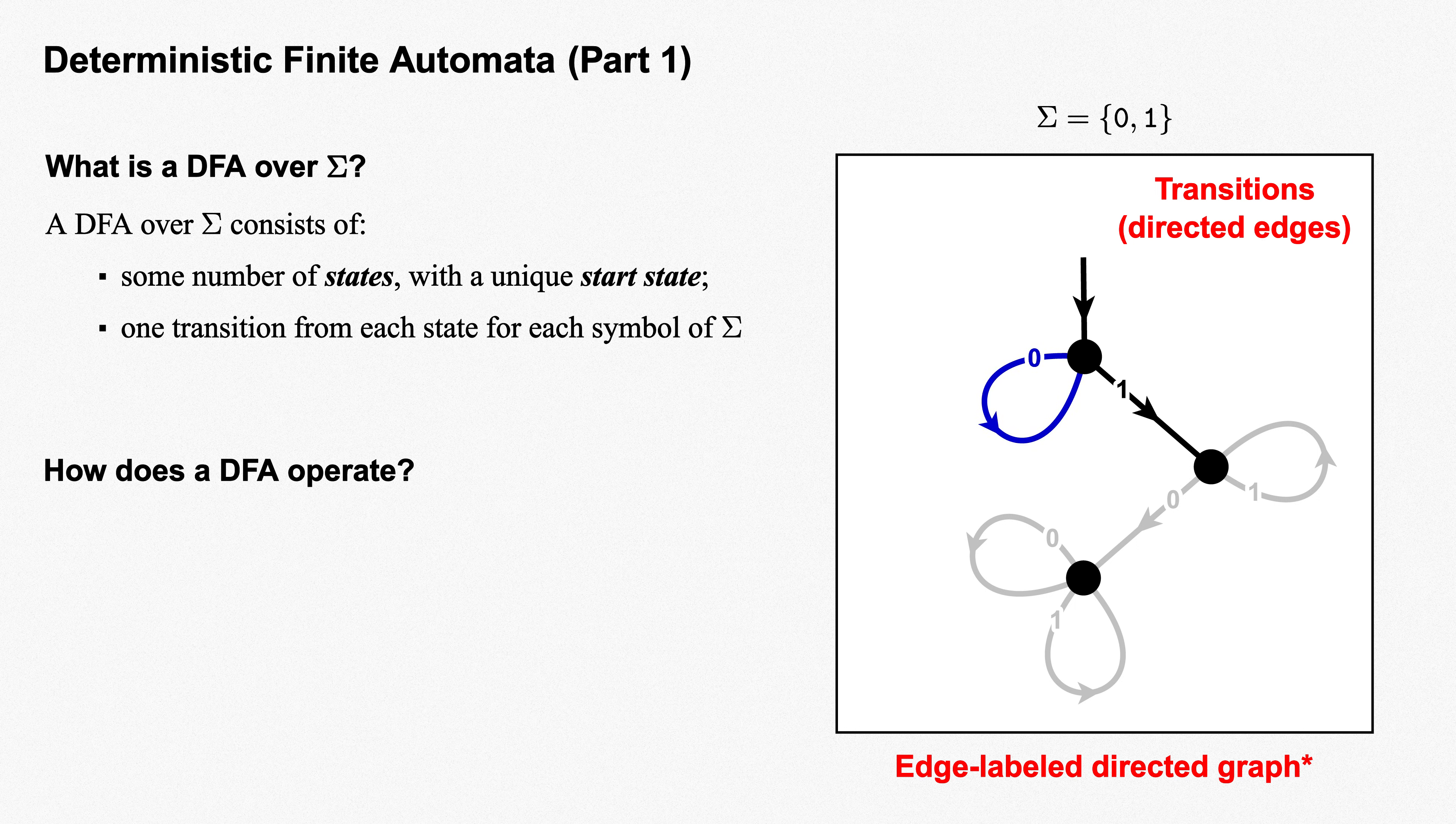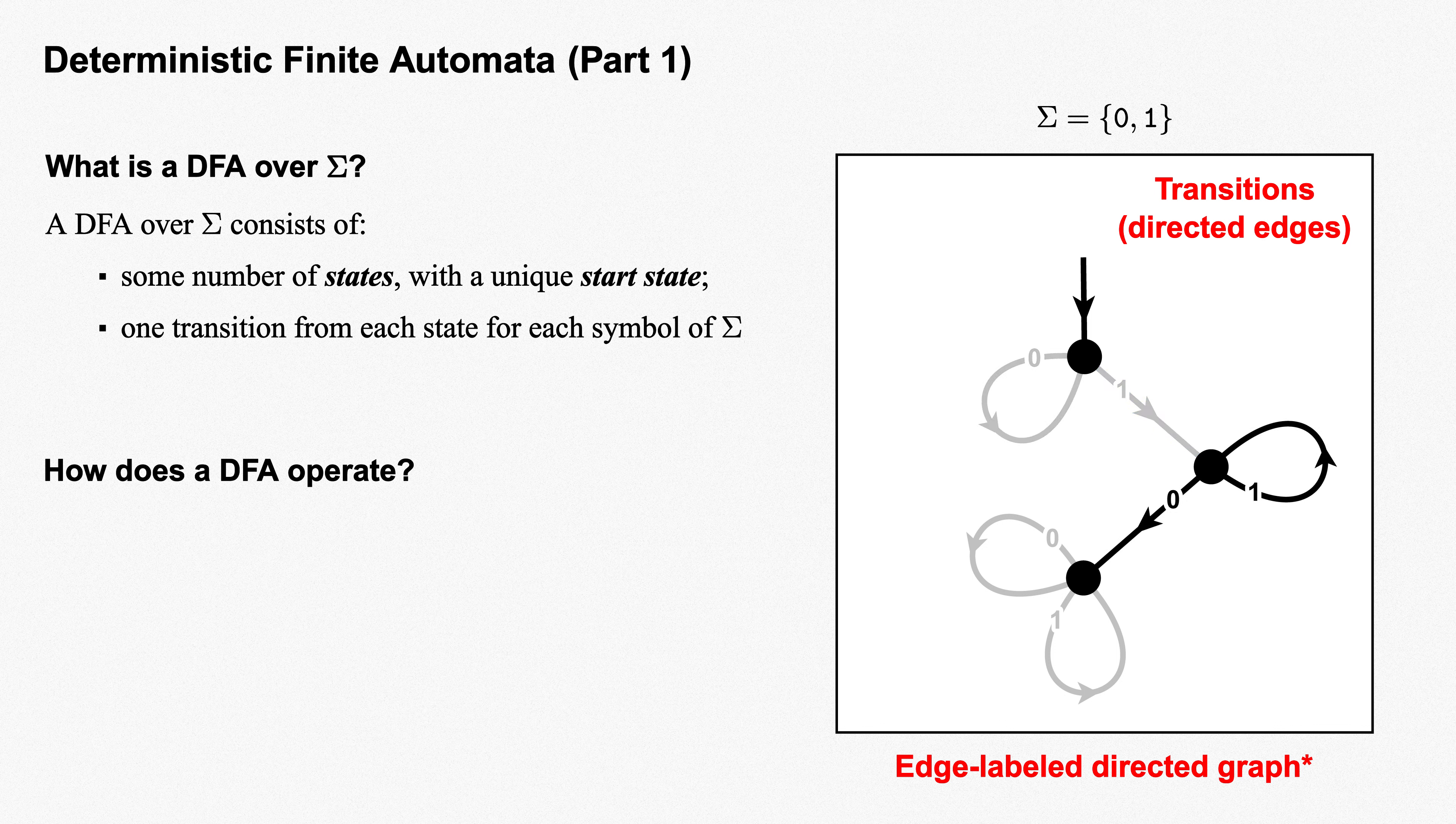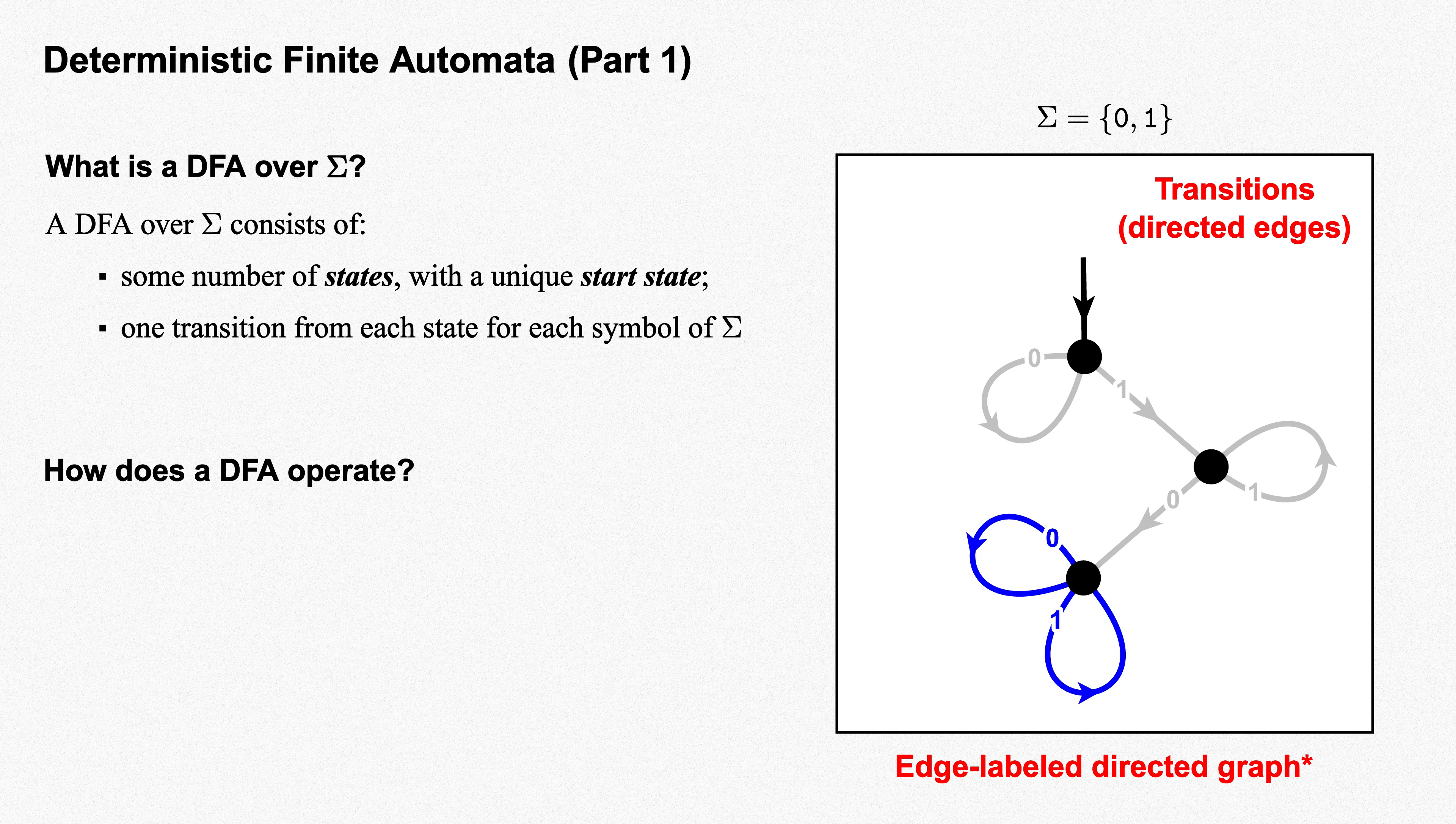Let's go through the transitions of our example DFA. From the start state, we make a loop back to the start state on the symbol 0, and move down to the state at the right on the symbol 1. From the state at the right, we loop back to this state on the symbol 1, and we move to the bottom state on the symbol 0. And from the bottom state, we loop back to the bottom state on both a 0 and a 1.